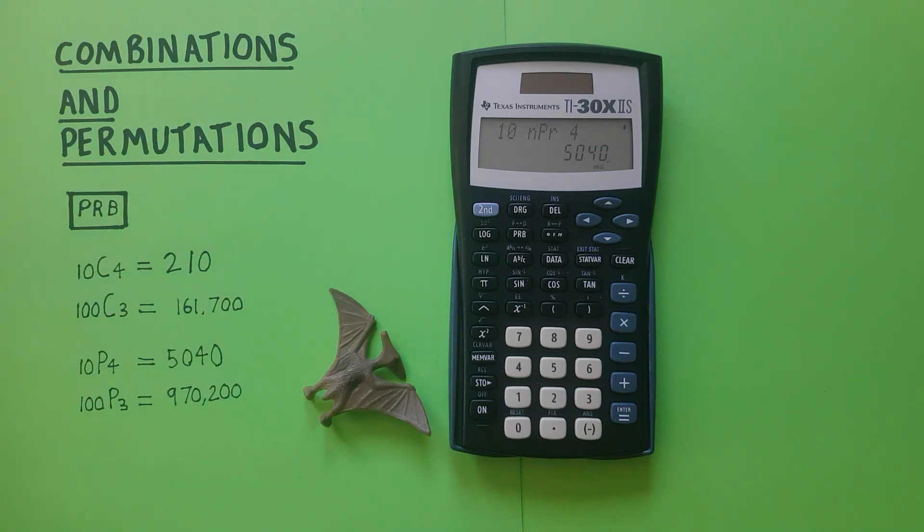So that tells us there are 5040 possible permutations or ways to choose 4 from a set of 10 when the order does matter.